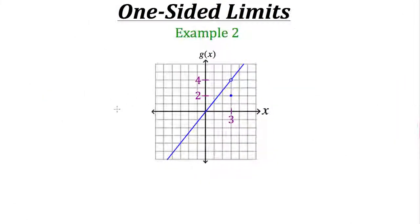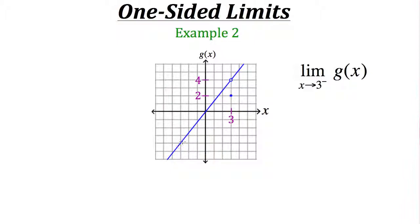Now let's take a look at another example. This time we have a graph of the function g of x, and we'll answer similar questions. First, the limit of our function as x approaches 3 from the left side: coming from the negative x-axis toward x equals 3, we arrive at roughly a value of 4. So the limit from the left is 4.